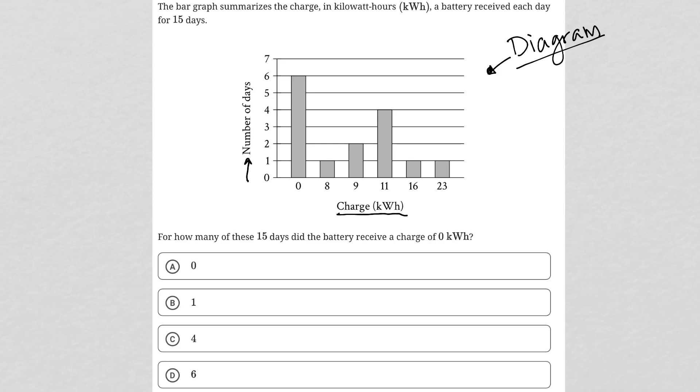To use what I call the pinpoint method, I'm going to just circle this bar here. And this would mean that a charge of nine occurred over two days, right?